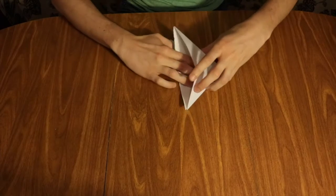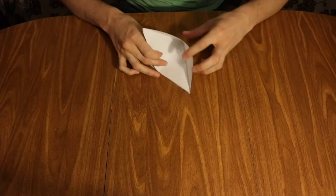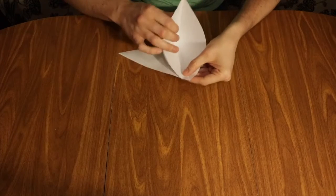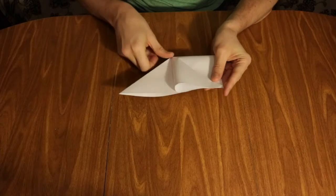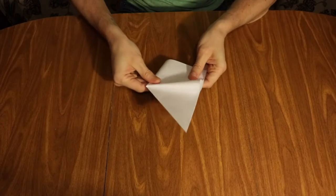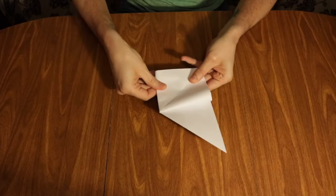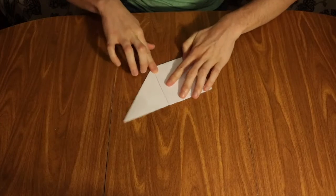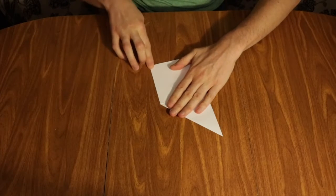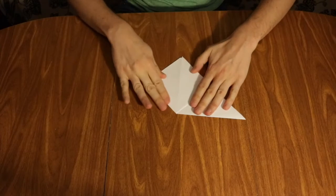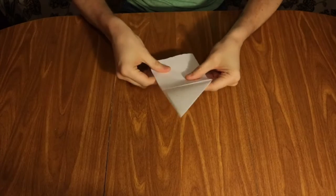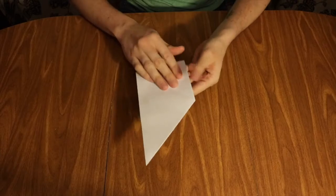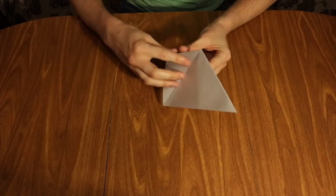Then you're going to take this little pocket here made by those folds and open that guy up. You are going to take the edge of that corner and tuck it down so it is flush with the opposite edge which is going to make a little square. Get rid of the little crumb that was sticking to your paper. And now you can see we've made a little square.